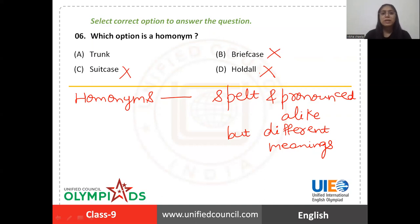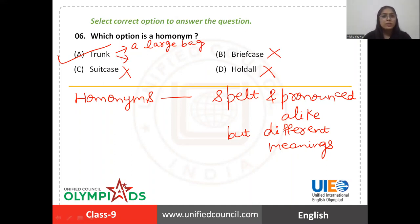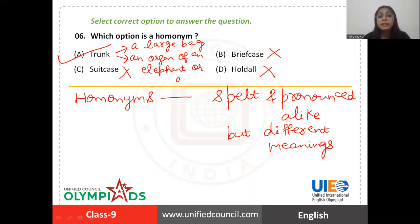All these words mean a large bag which you use to carry clothes, especially when you are traveling. If I talk about 'trunk', it is also used for a large bag, but along with that it can have other meanings. An organ of an elephant is also called a trunk, and a tree trunk is also called trunk. So this word has multiple meanings — that is why 'trunk' is a homonym. The answer is option A.